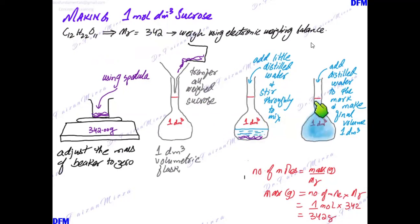You don't add 1 dm³ of water first and then add solute, because it would end up giving you a solution way above the 1 dm³ mark, and that will be a wrong way to make the solution.